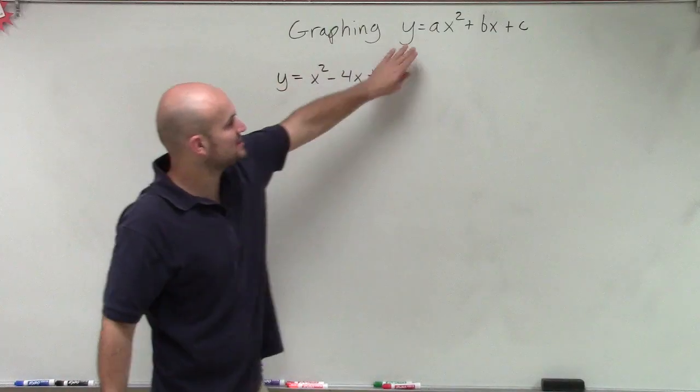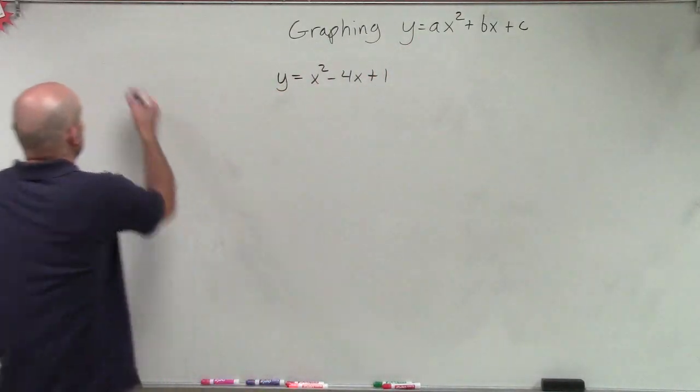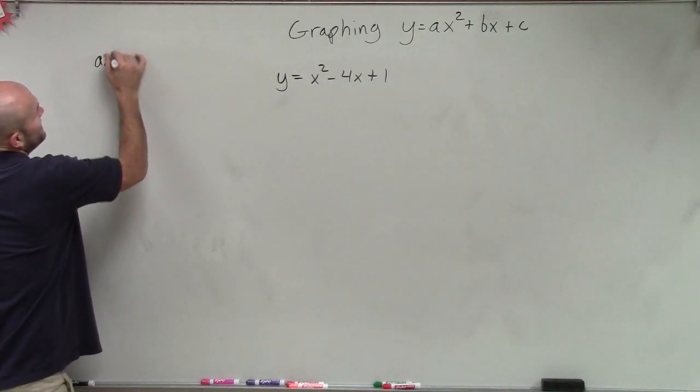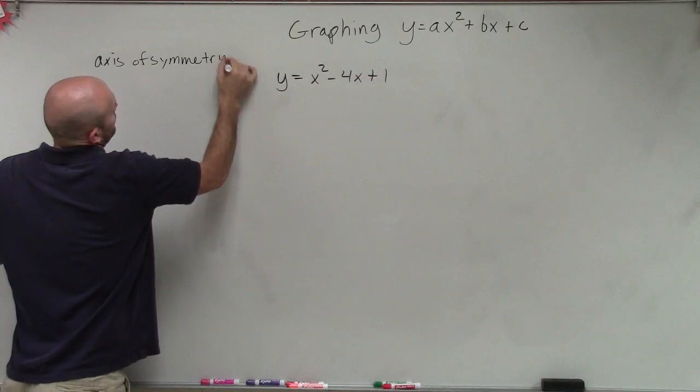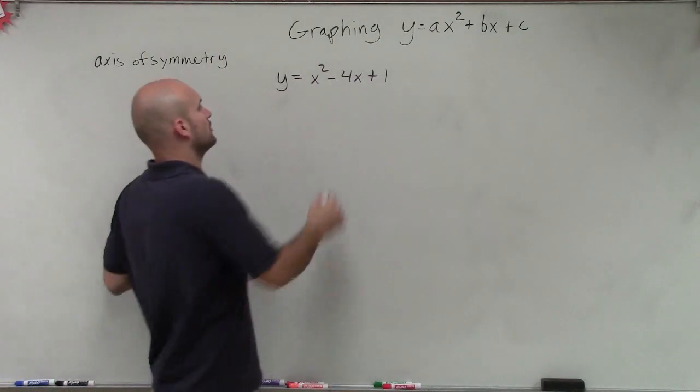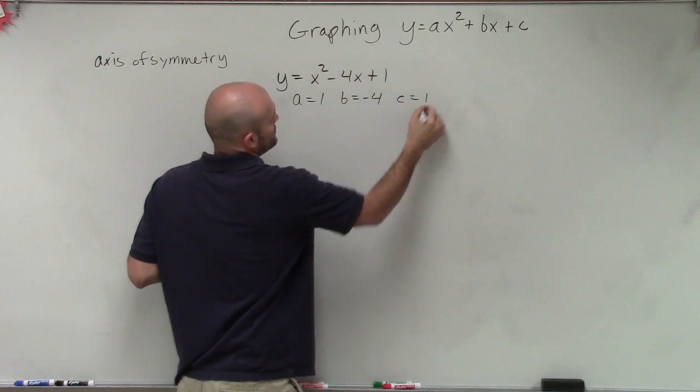When using an equation in the form y equals ax squared plus bx plus c, the main important thing is finding that axis of symmetry. To find the axis of symmetry, we need to know what our points are. We have a equals 1, b equals negative 4, and c equals 1.